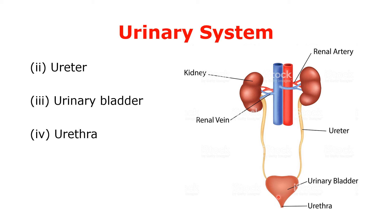After the ureter, the next organ is the urinary bladder. The urinary bladder is a pear-shaped muscular bag-like structure which acts as a reservoir for urine. It is present in the pelvic cavity of the human body. The lowest part of the bladder is called the base and the upper part is called the fundus.